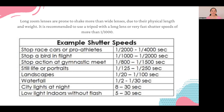If you're photographing indoors in a low-light environment and you're not using a flash, you're going to want a very long shutter speed of between 5 and 30 seconds.